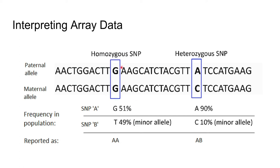In this example, a homozygous SNP on the left means the nucleotide at this locus is the same on both paternal and maternal chromosomes. Since this guanine nucleotide is found in the majority of people in the population, it is designated capital A, and reported as AA. If this locus were homozygous for the minor allele — known to be T — it would be reported as BB. On the right, a heterozygous SNP: paternal chromosome has the major allele (A) and maternal has the minor allele (B), so the SNP array result is AB.